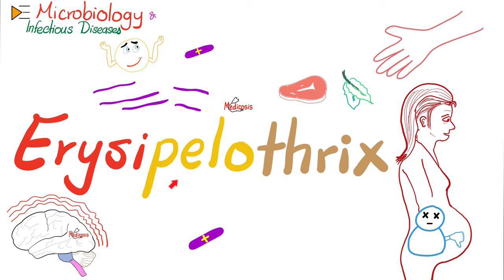Now let's talk about erysipelothrix, which causes erysipeloid disease. Breaking down the name: 'oid' means like or similar to erysipelas; 'erysi' is like erythema — redness; 'pelo' means skin, because it's an acute inflammation of the skin with redness, hotness, swelling, pain, and loss of function.